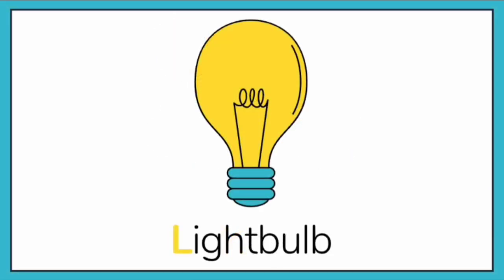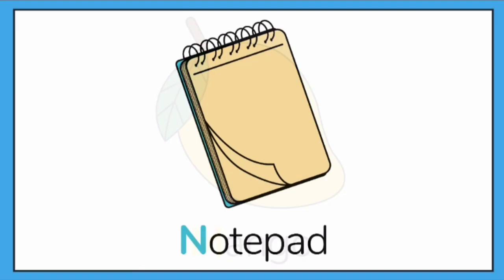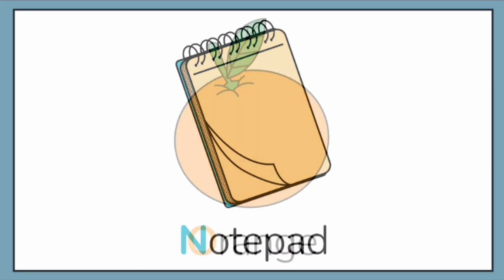L for Lightbulb. M for Mango. N for Notepad.